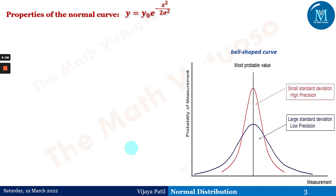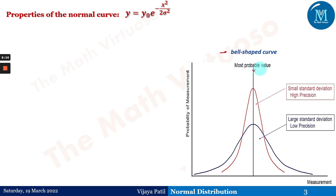The normal curve is given by y = y₀ × e^(−x²/(2σ²)). This curve is bell-shaped. Observing two different curves: the blue curve represents large standard deviation and low precision, while the red curve represents small standard deviation and high precision. The curve measures probability against measurement value, giving the most probable values at the peak.